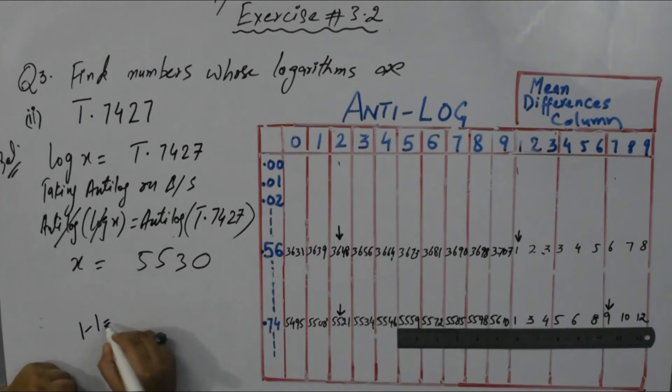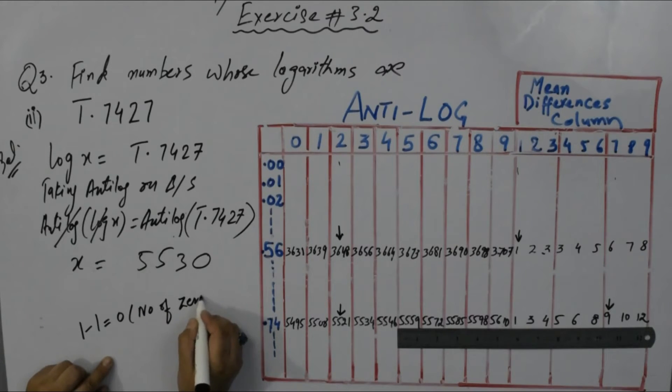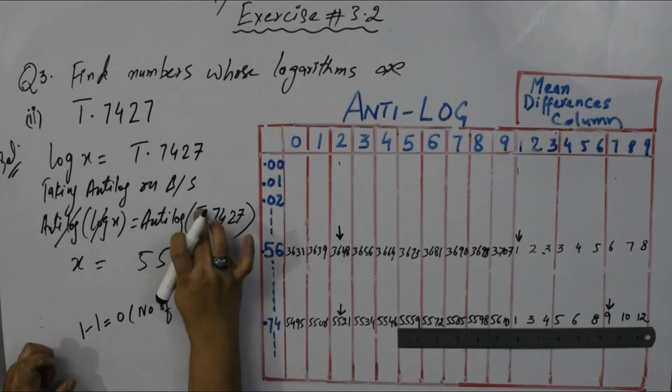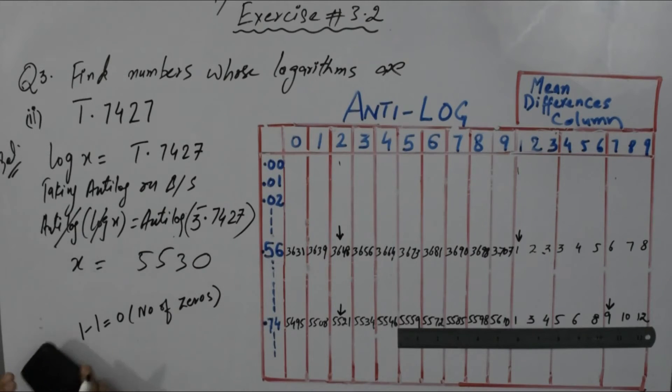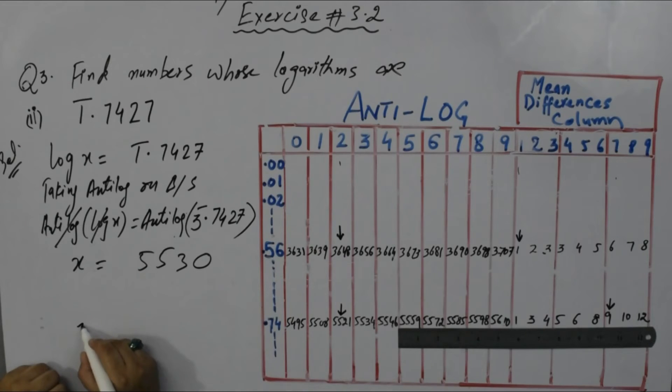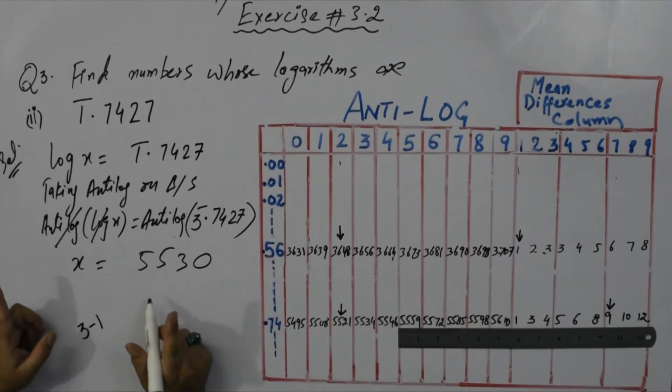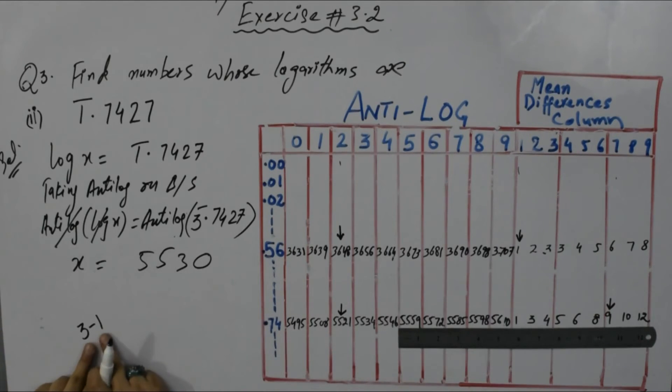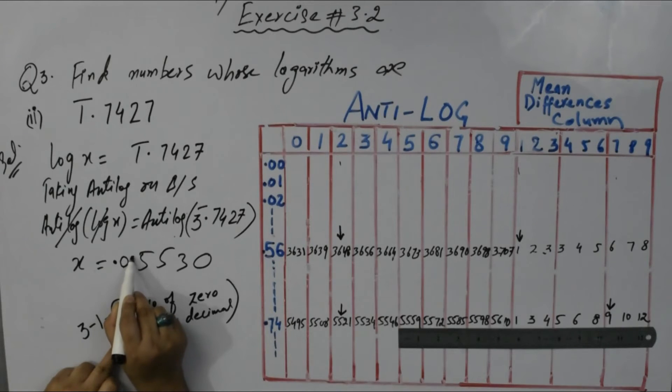Now if your characteristic is negative - in negative we subtract one. One minus one equals zero here. When characteristic is negative, it shows number of zeros after decimal. Let's suppose if my characteristic is -3. In negative you subtract one, so -3 minus 1 is -2. Number of zeros means after decimal: this is my decimal, then zero one, zero two. This is my number.